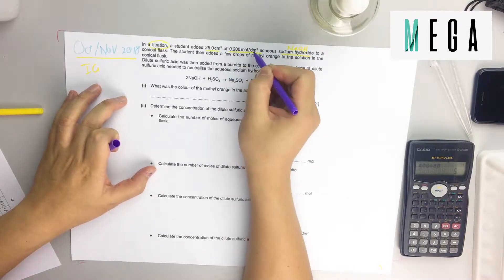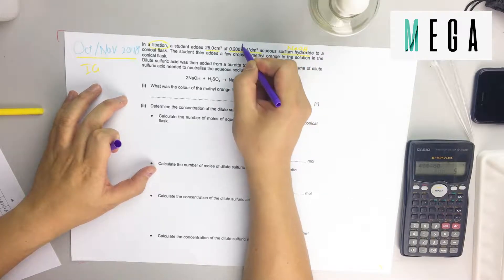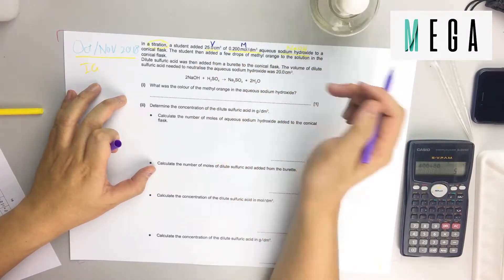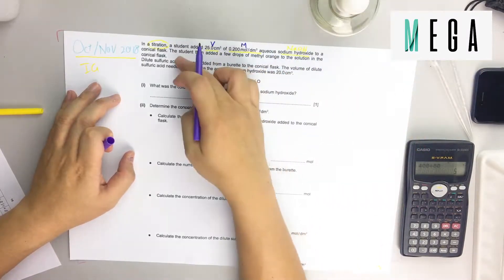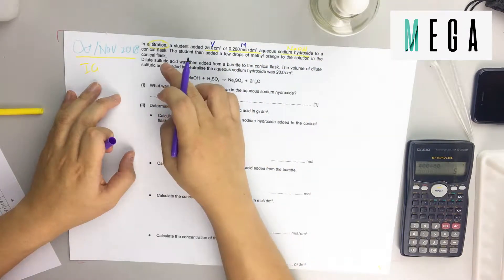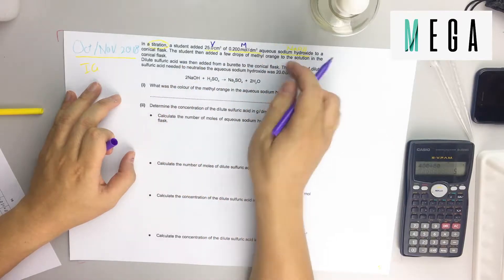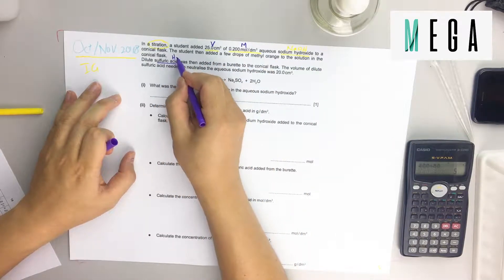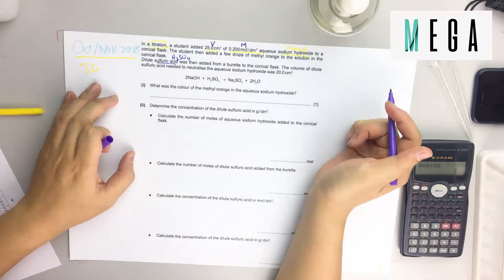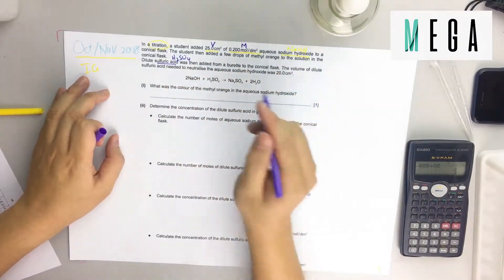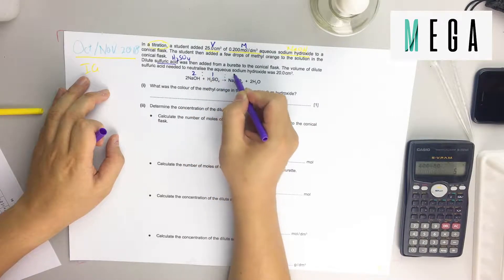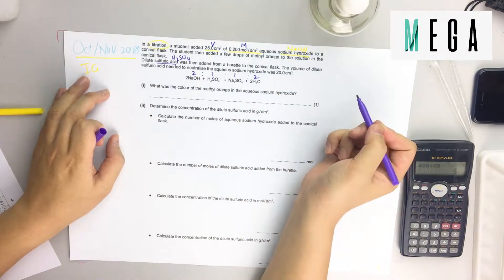Whenever you see sodium hydroxide, change the color to make it easier. From the unit you know this is capital M concentration and this must be the volume V. They add a few drops of methyl orange as indicator and then dilute sulfuric acid H2SO4 to neutralize it. From the equation you can write the ratio on top: 2 to 1 to 1 to 2. This will be helpful later.